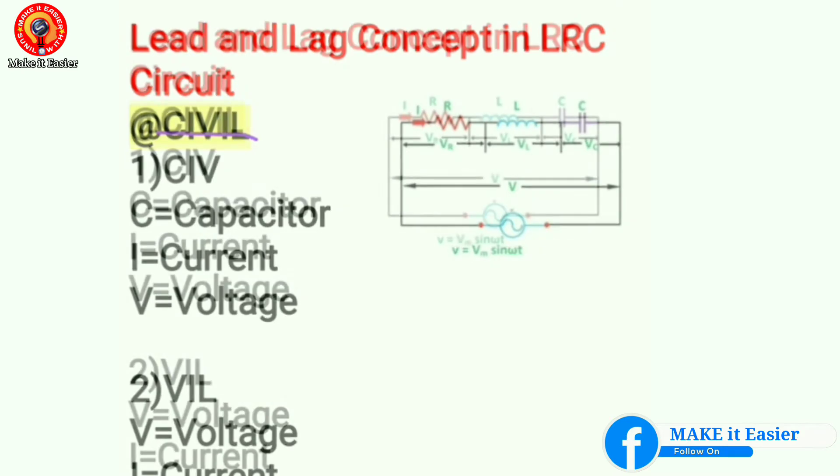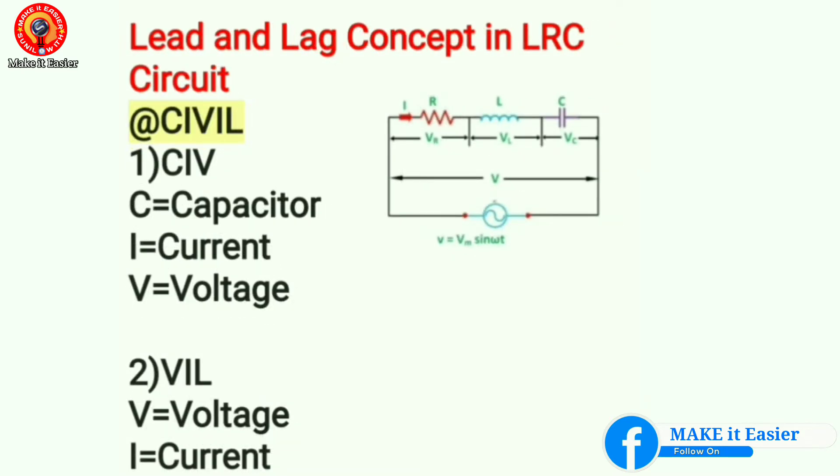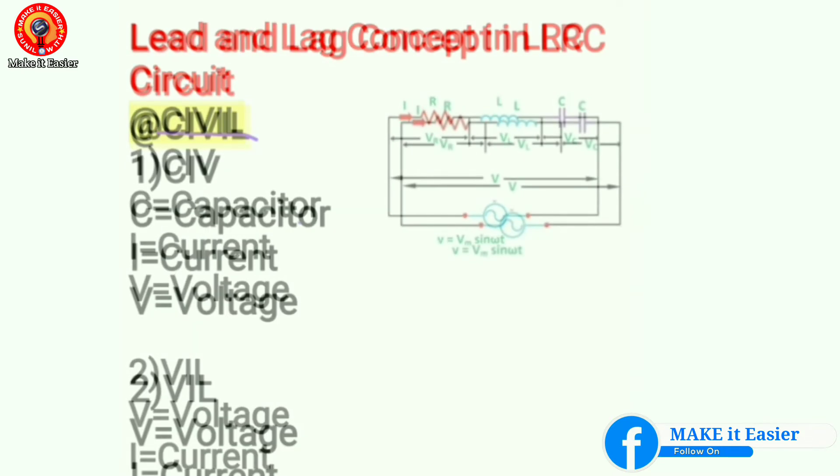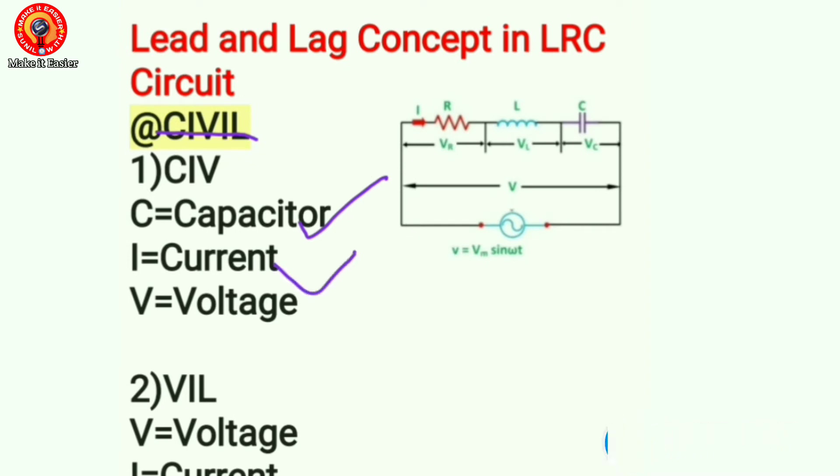For RC circuit, we should take the first three terms, that is C-I-V. Here C stands for capacitor, I stands for current, and V stands for voltage. Simply, in the C-I-V, I means current comes before V. Current comes before voltage, so current leads the voltage, but voltage comes after the current in C-I-V term, so voltage lags the current in the RC circuit.